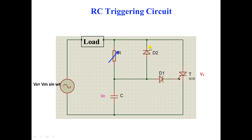Diode D2 has its cathode on one side and anode on the other; diode D1 has its anode on one side and cathode on the other. V0 is the voltage across the load, VC is the voltage across the capacitor, and Vt is the voltage across the thyristor. The thyristor will turn on only when the gate-to-cathode voltage becomes equal to or greater than VGT, the gate triggering voltage.